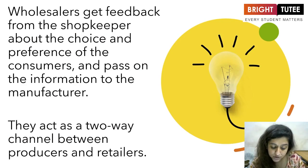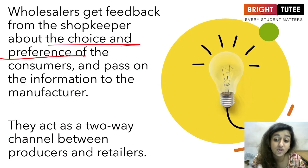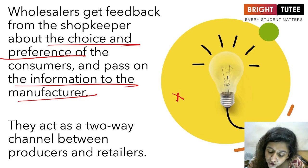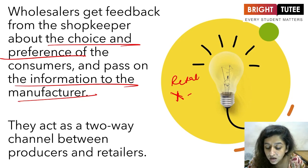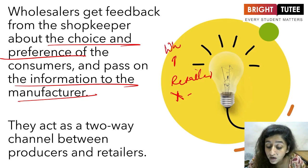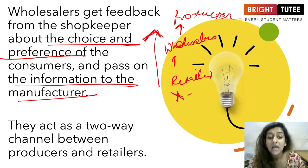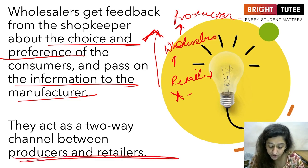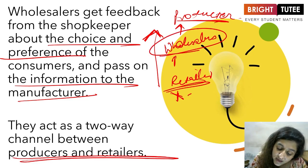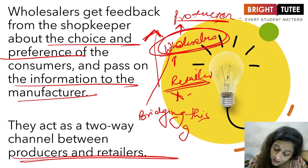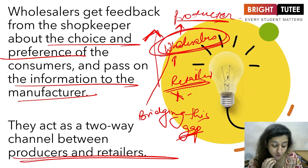Wholesalers get feedback from shopkeepers about the choice and preference of consumers and pass on that information to the manufacturers. For example, if the demand for a particular chips brand is getting very high, the retailer tells the wholesaler, and the wholesaler tells the producer, so production of that product increases. They act as a two-way channel bridging and maintaining communication between producers and retailers.